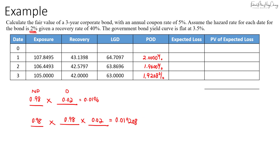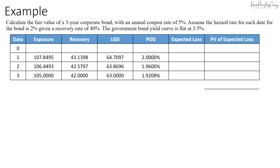Now we calculate the expected loss by multiplying the loss given default by the probability of default. Year one: 64.7097 × 2% = 1.2942. Year two: 63.8696 × 1.96% = 1.2518. Year three: 63 × 1.9208% = 1.2101.